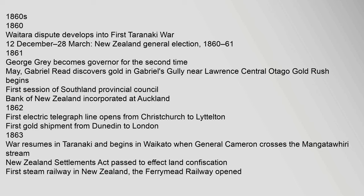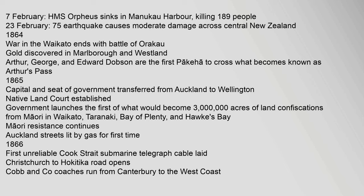First session of Southland Provincial Council. Bank of New Zealand incorporated at Auckland. 1862: First electric telegraph line opens from Christchurch to Lyttelton. First gold shipment from Dunedin to London. 1863: War resumes in Taranaki and begins in Waikato when General Cameron crosses the Mangatawhiri stream. New Zealand Settlements Act passed to effect land confiscation. First steam railway in New Zealand, the Ferrymead railway, opened. 7 February: HMS Orpheus sinks in Manukau Harbour, killing 189 people.